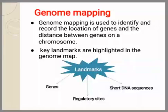A genome map is just like a road map which guides us to reach towards our destination with the help of landmarks. Genome mapping is constructing a map of the genome where you can find the position of a specific gene and the distance from one gene to another. It helps scientists know about the inheritance pattern of genes and also helps in the specific study of the desired gene. Scientists can navigate around the genome with the help of landmarks.